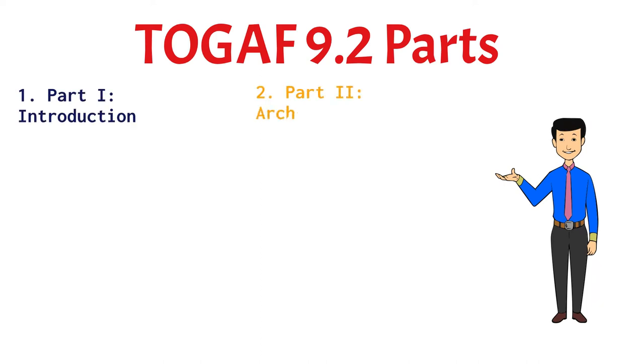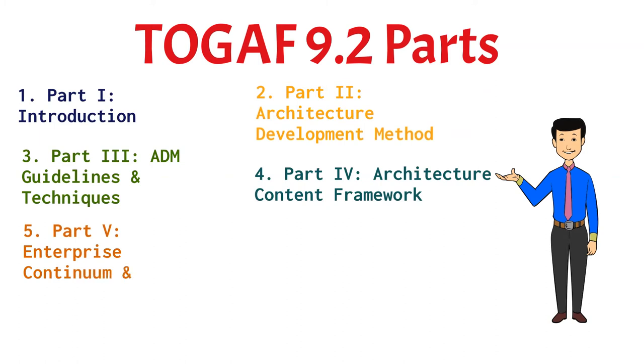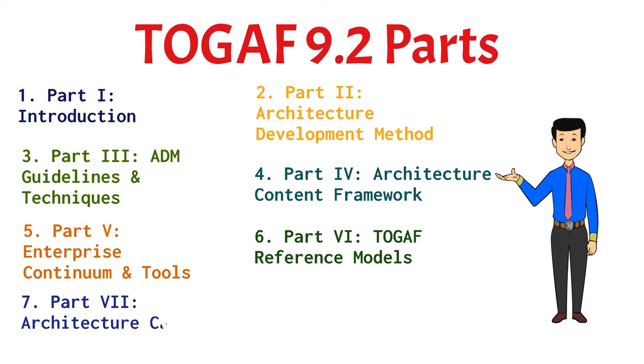TOGAF standard consists of seven parts: Introduction, the architecture development method or the ADM which is the fundamental part, the ADM guidelines and techniques, the architecture content framework, the enterprise continuum and tools, TOGAF reference models, and the architecture capability framework.